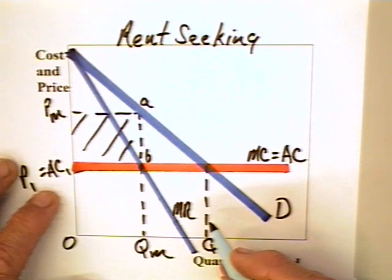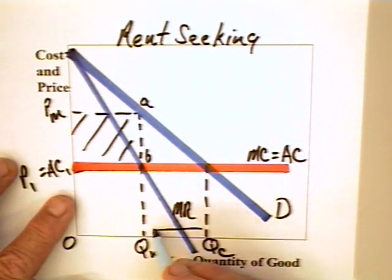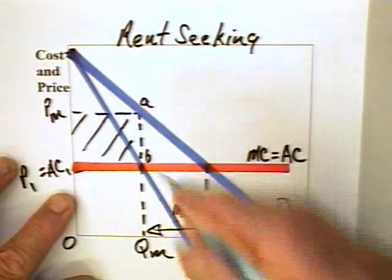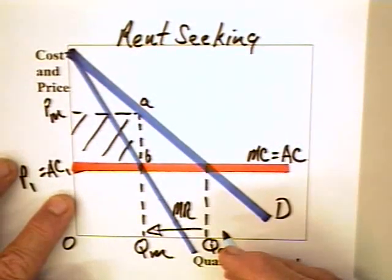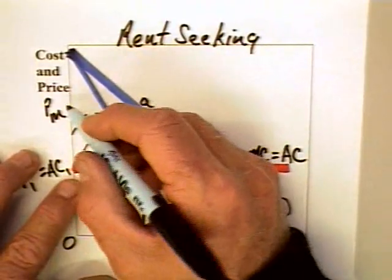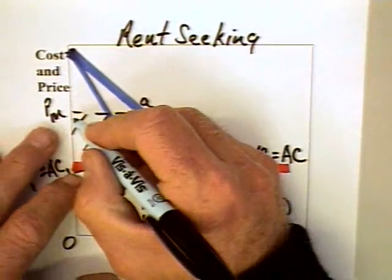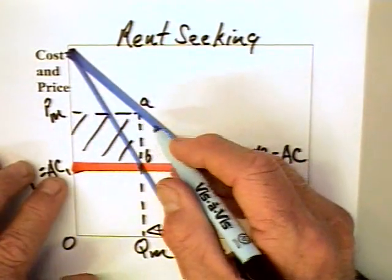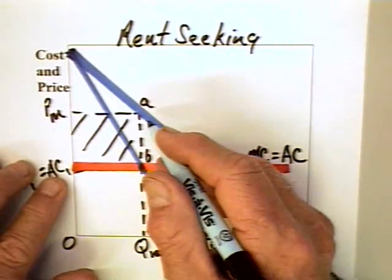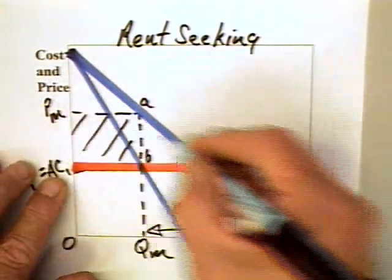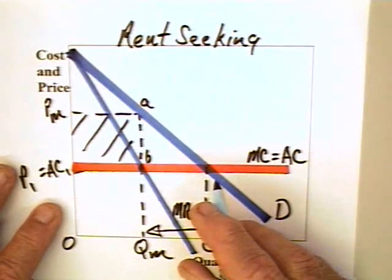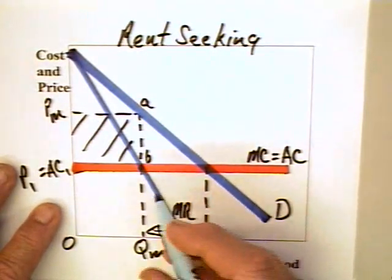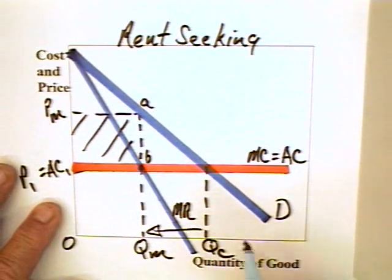You can imagine that competitors would like to get together, restrict the output, and by restricting the output they can raise the price and generate monopoly profits. Once a cartel forms to raise the price to PM and get these profits, however, every producer has an incentive to chisel on the cartel, lower the price below PM, and you can end up back at a price of P1. Where there are lots of producers, cartels are very difficult to form and maintain.